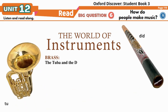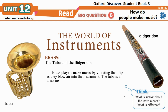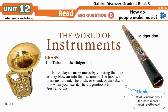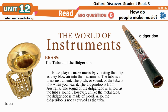Brass: the tuba and the didgeridoo. Brass players make music by vibrating their lips as they blow air into the instrument. The tuba is a brass instrument with a low pitch. The didgeridoo is from Australia, and its sound is as low as the tuba's sound. However, unlike the metal tuba, the didgeridoo is made of wood, and it is not as curved as the tuba.